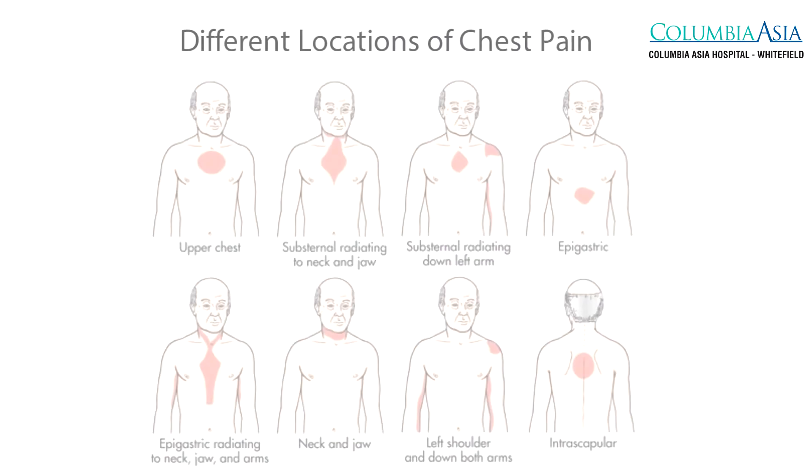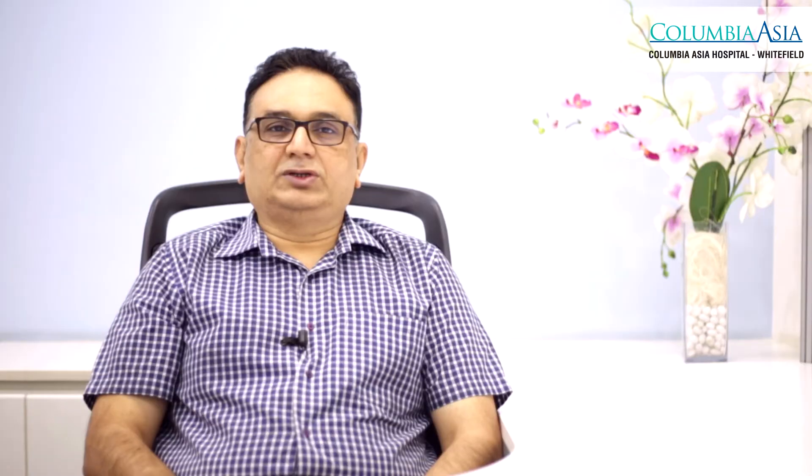Eliciting a proper history from the patient — like asking what is the kind and nature of the pain, where it is occurring, that is the location of the pain, whether it is located in one particular point or is getting related to other portions of the body, the duration of the pain, the severity of the pain — all these things are very helpful in determining whether the pain is related to the heart or not.